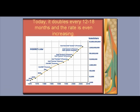Today it doubles every 12 to 18 months and the rate is even increasing. Here is a graph from 1970 to 2007 of Moore's Law showing how transistors are increasing.